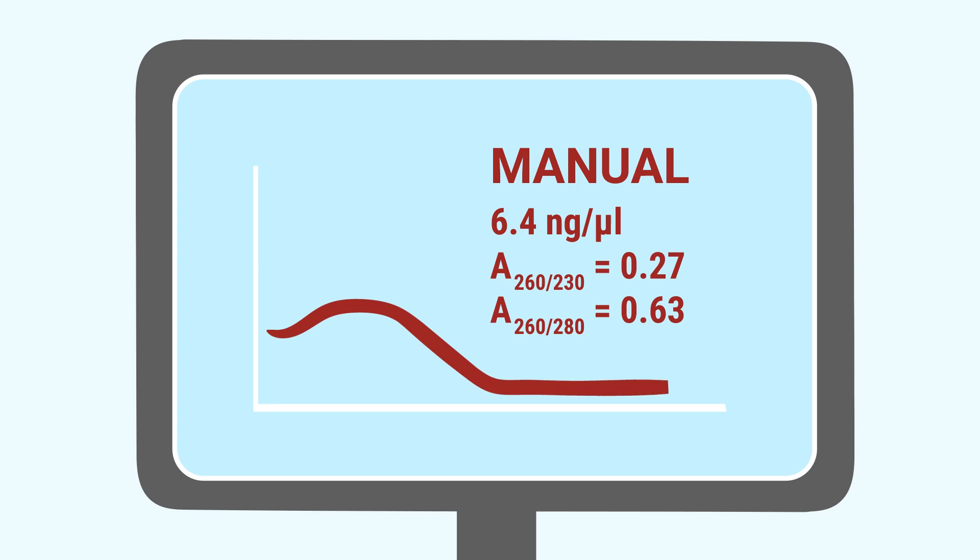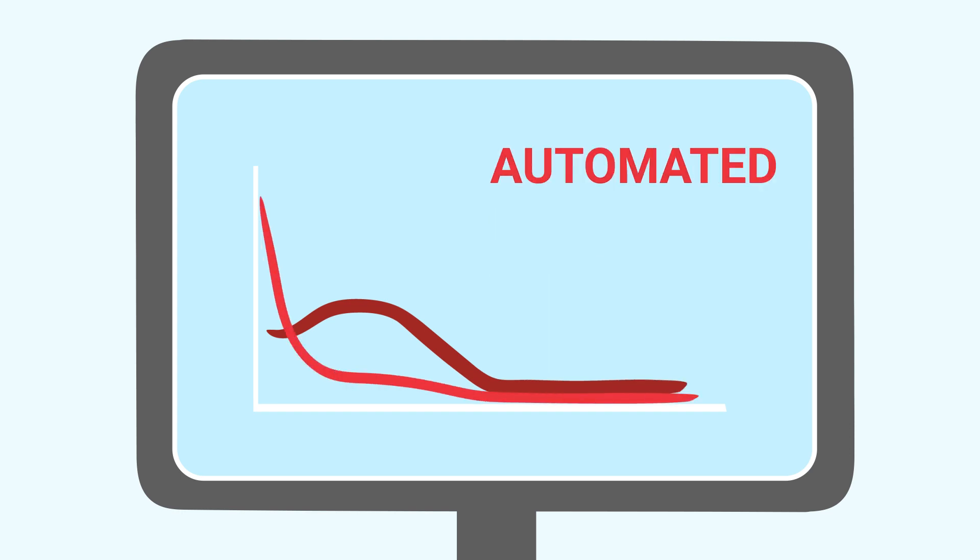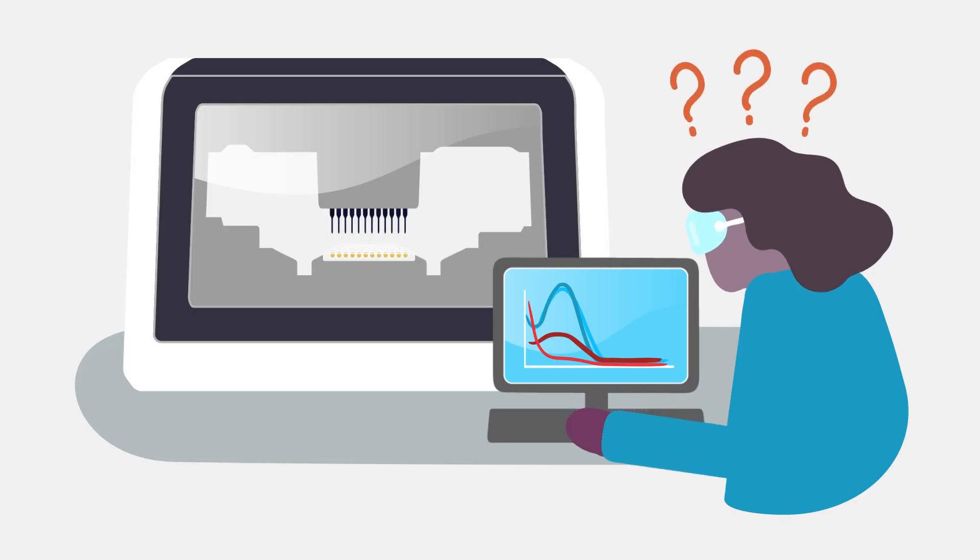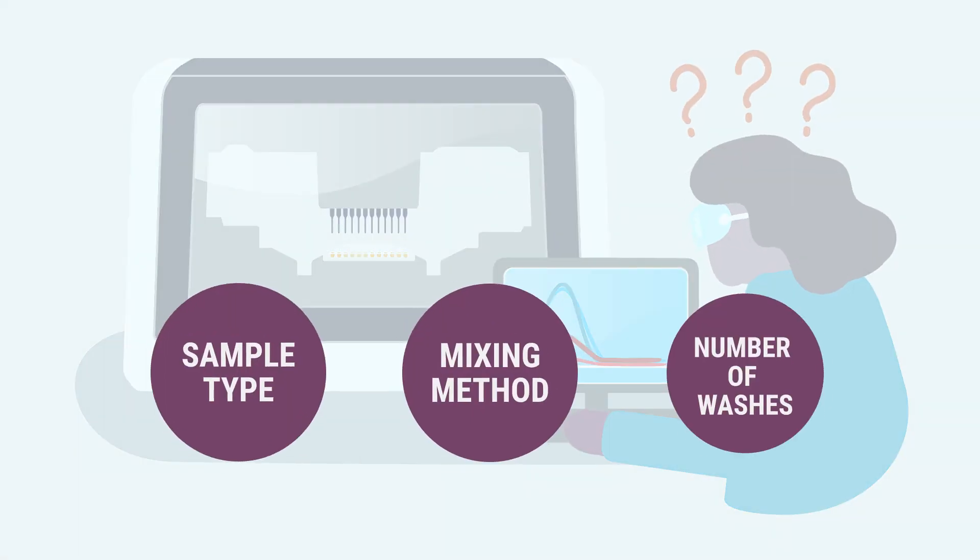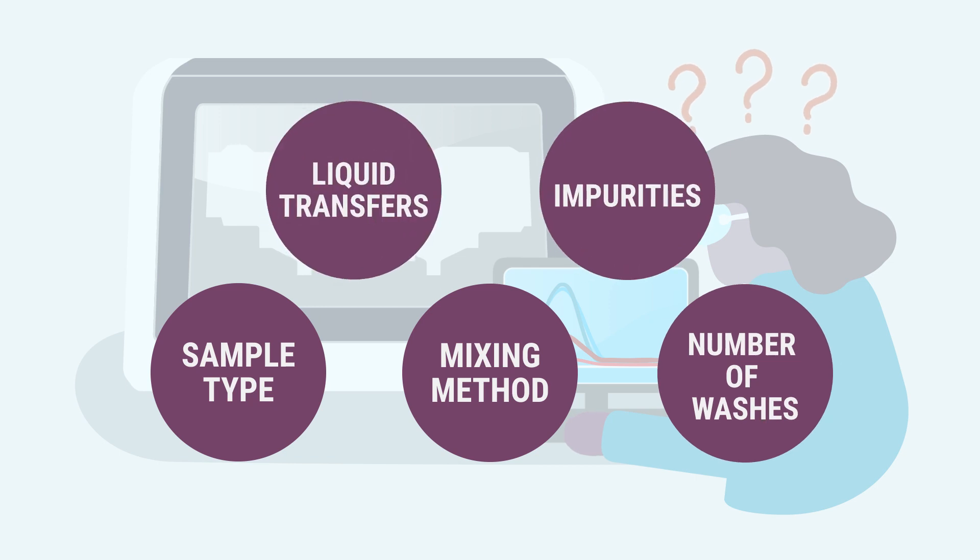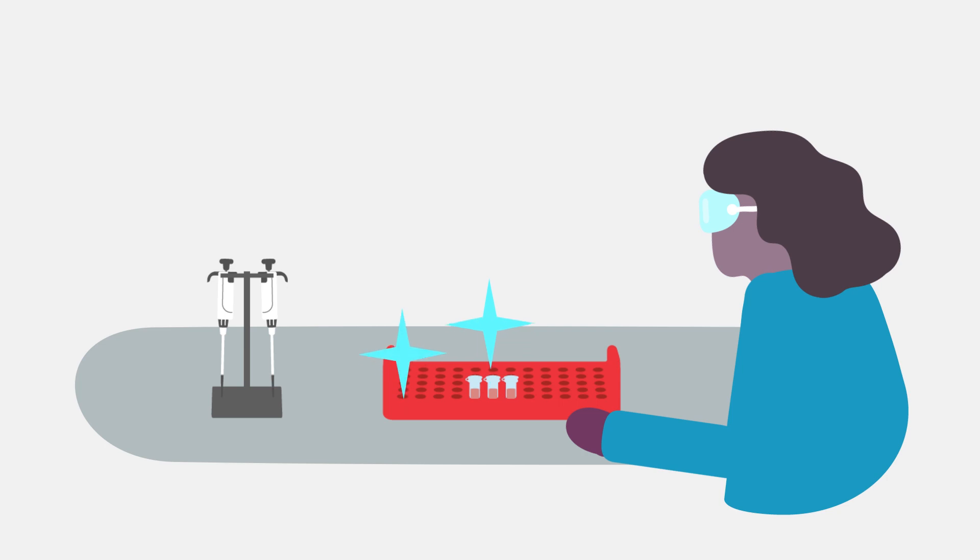If you struggle to get high yields and purity from a manual method that uses the same reagents as your planned automation, the automated method will be worse. There are too many variables to control if you attempt to optimize extraction chemistry and robotics at the same time. A manual extraction method that works well will be a vital control for optimizing your automated workflow.